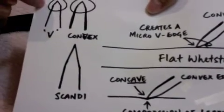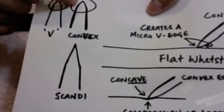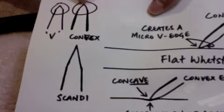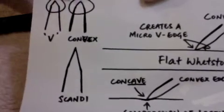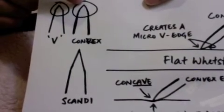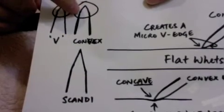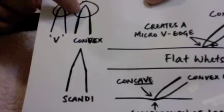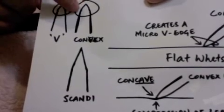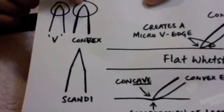This is a normal V-edge, and then this is a convex grind, or rather, let's talk about just the edge, the convex edge. It is, as you can see from the diagram, it is not flat, but it is rounded at the sides. The micro bevel is rounded, so I will call that a convex edge.